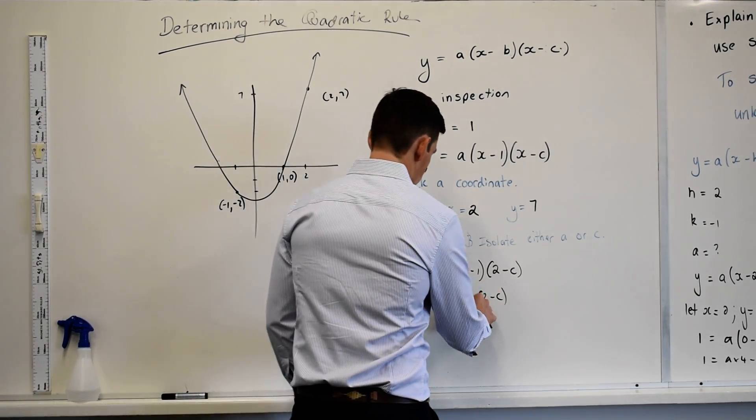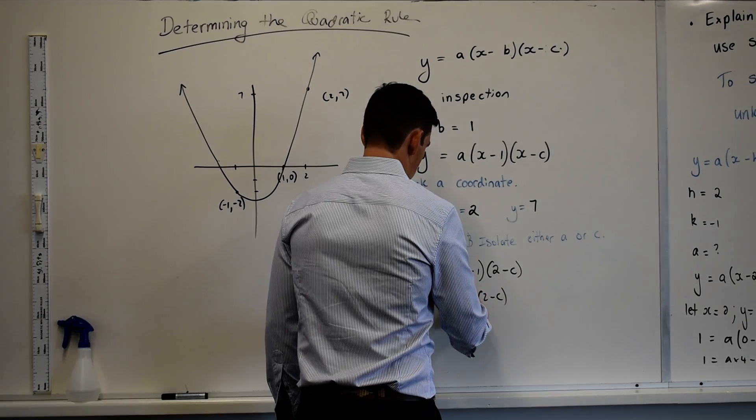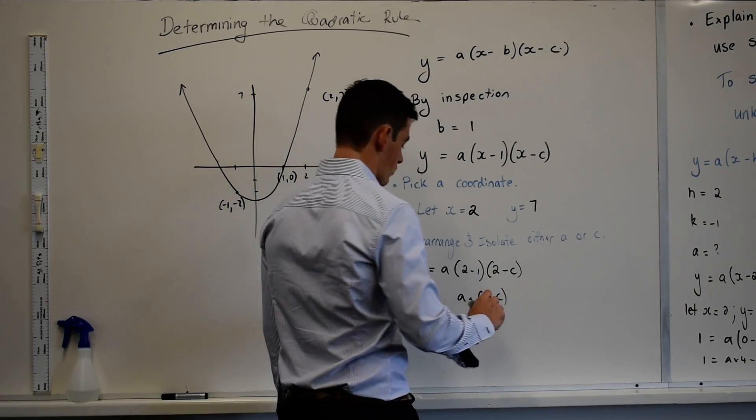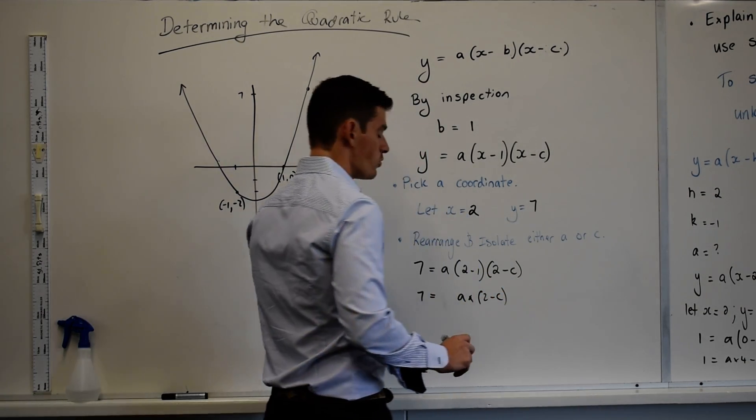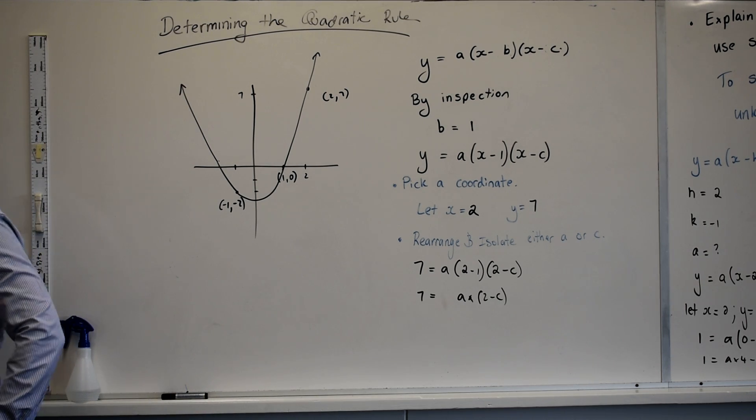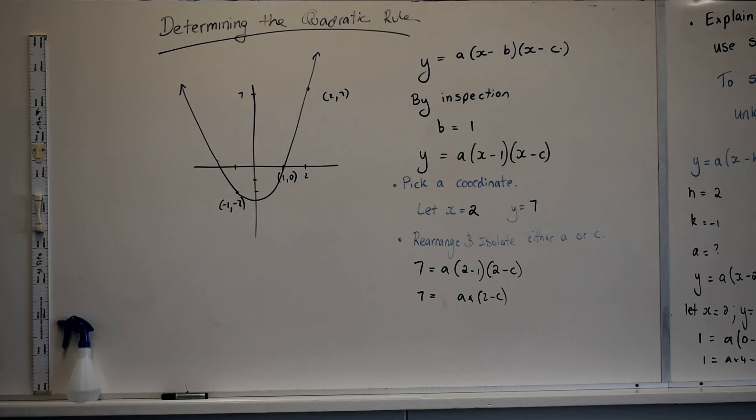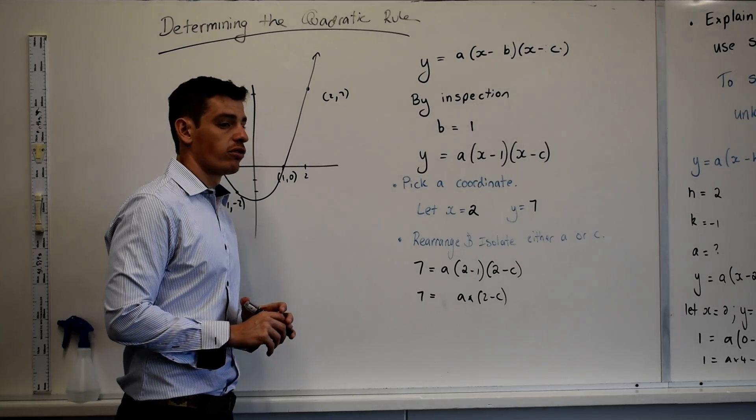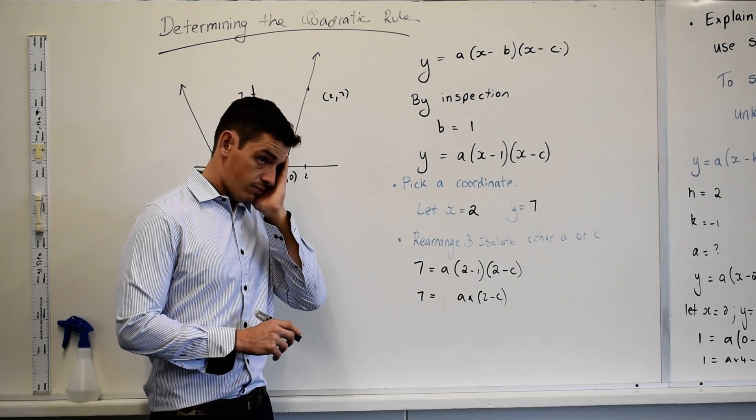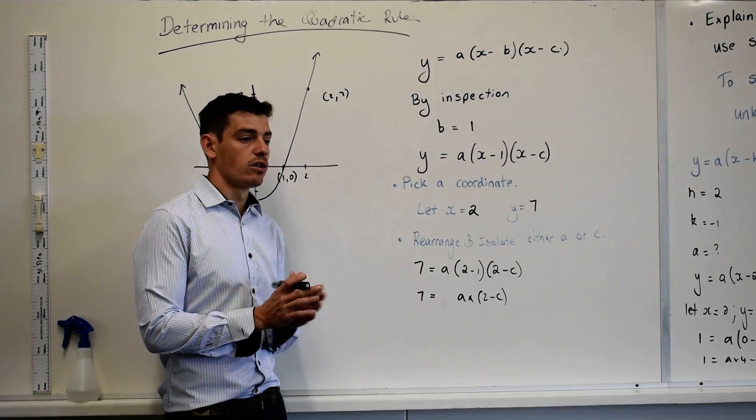When I'm doing simultaneous equations, I can get rid of that times 1. So I've just got A times 2 minus C. When I'm doing my simultaneous equations, what's the goal? What do I need to do when I'm using elimination? Sorry, elimination substitution. What's my next line going to look like?